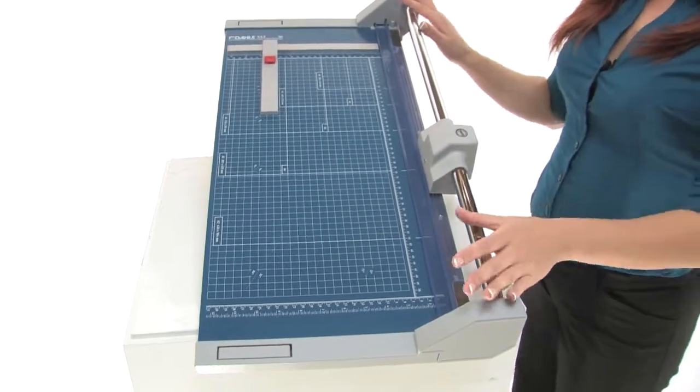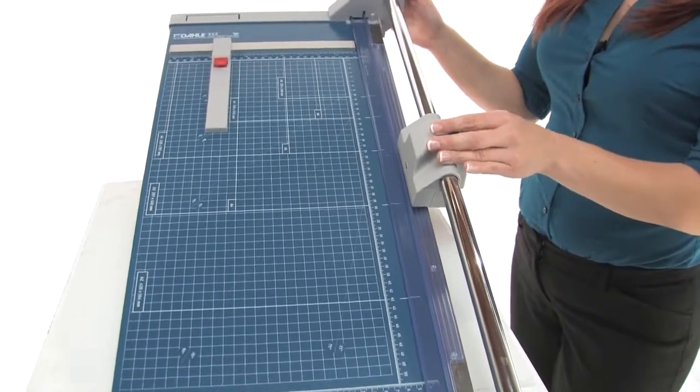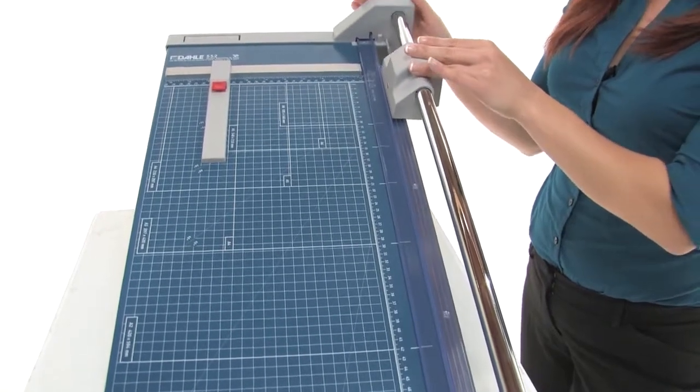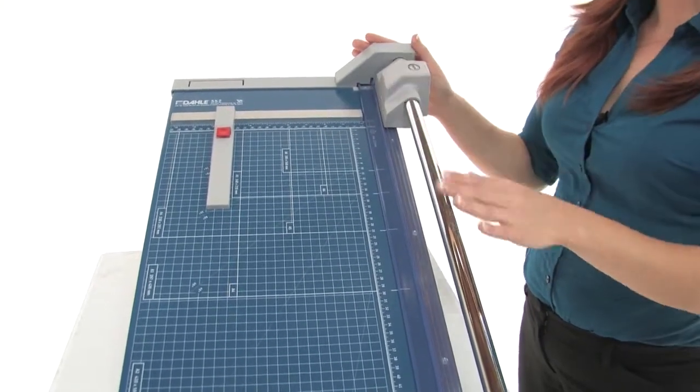It comes with a self-sharpening rotary blade encased in a plastic housing to prevent injuries, and it can cut in either direction.